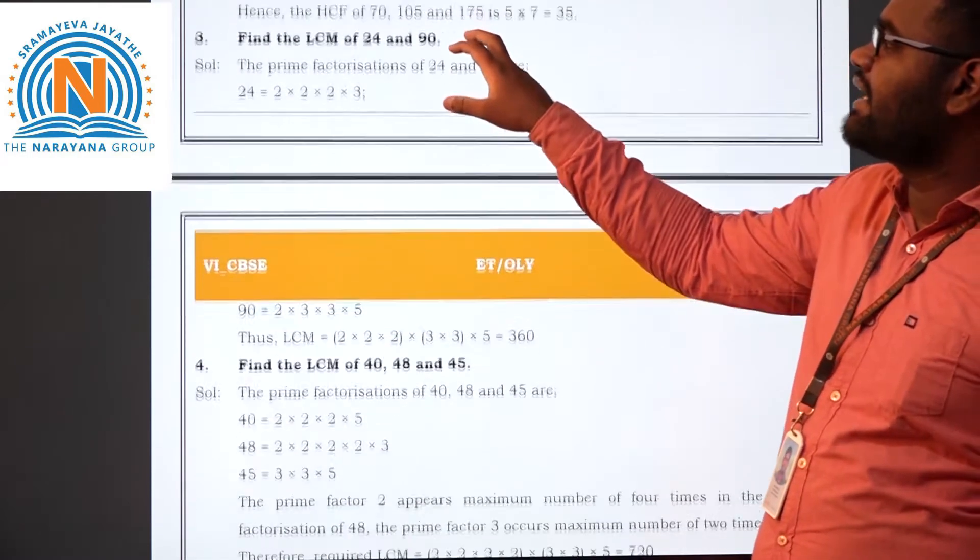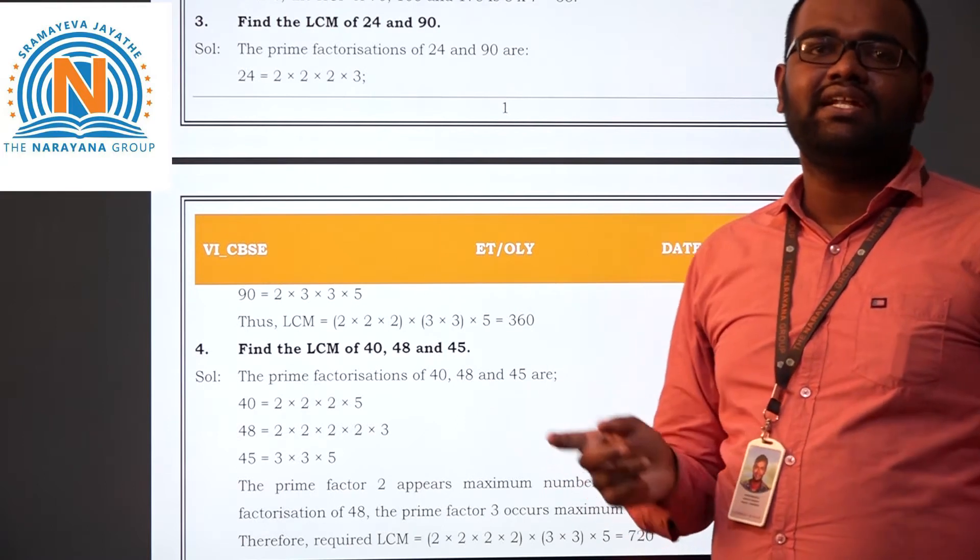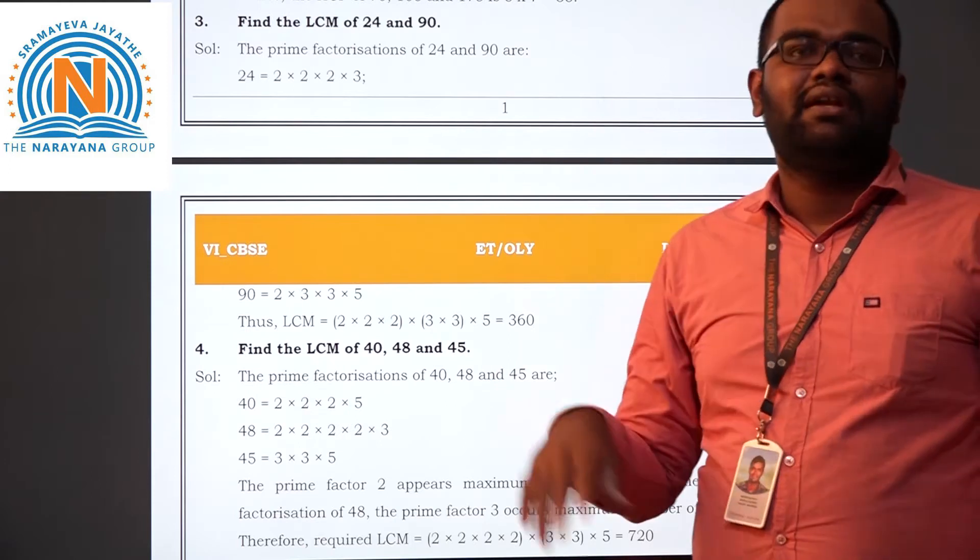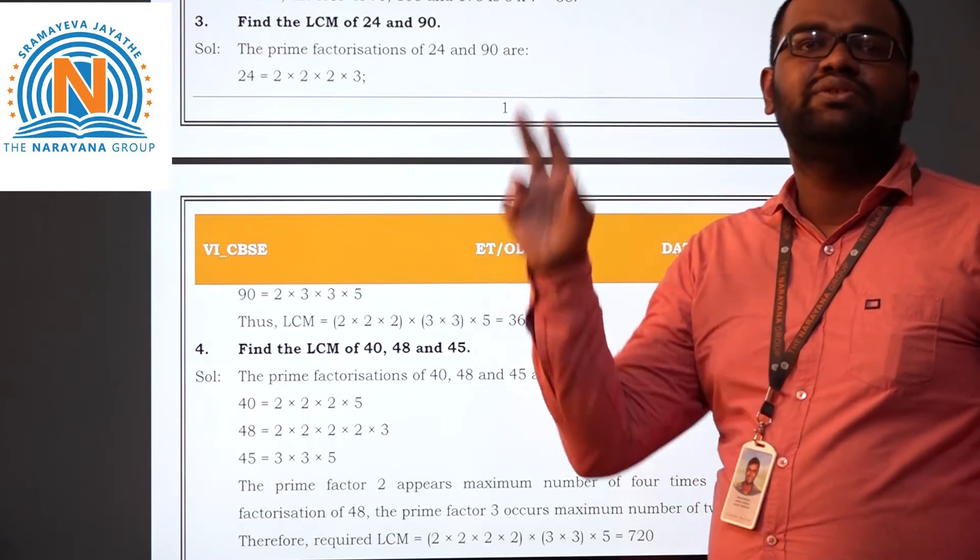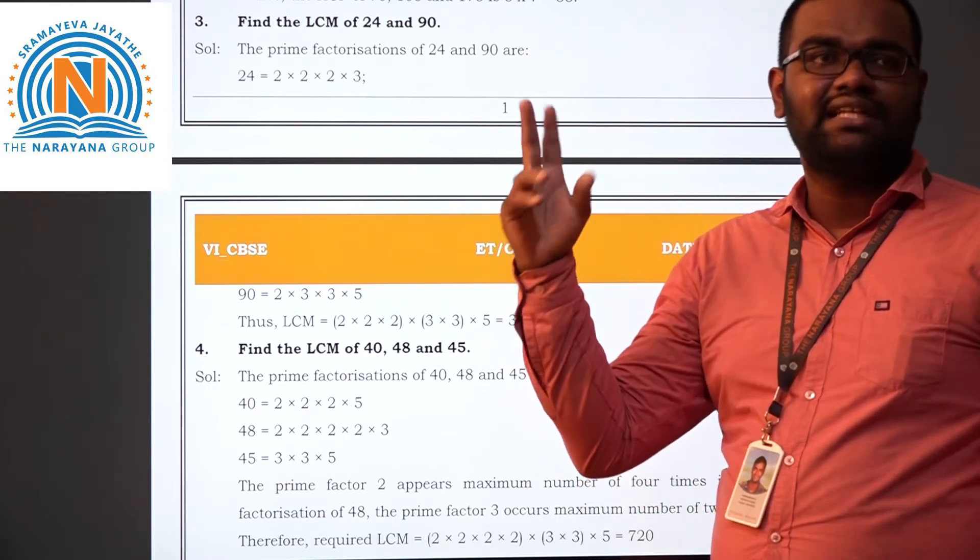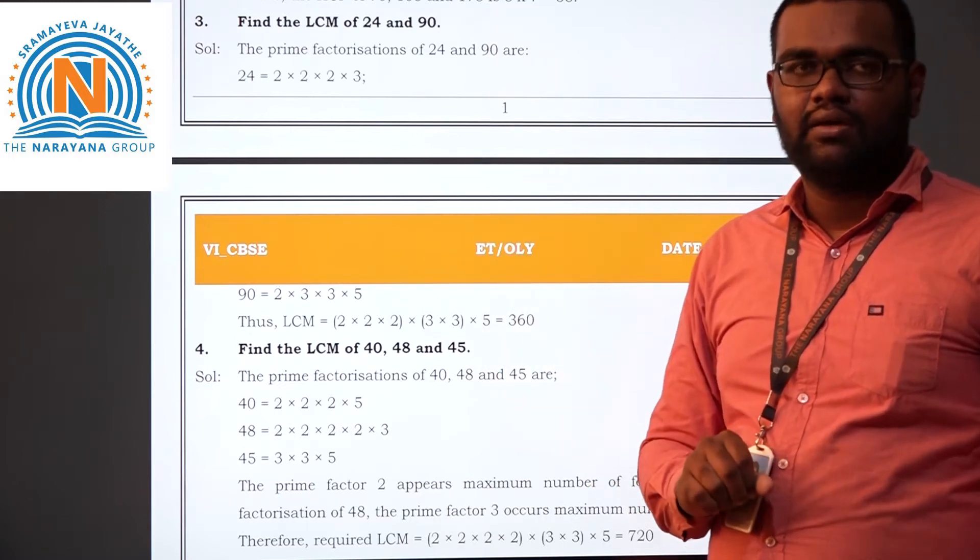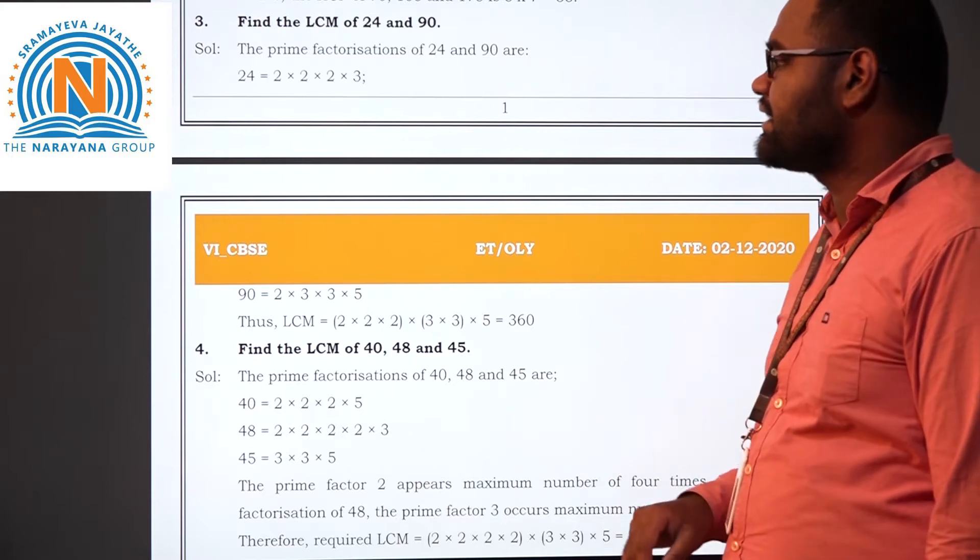When you are coming for LCM it is different. HCF it is different. LCM it is different. In HCF we are taking only common. LCM: common also we should take. Common is present in all the 3 numbers. Next to common is present in 2 numbers. And the single numbers, everything we have to take. We are having shortcut also. We will see that also.